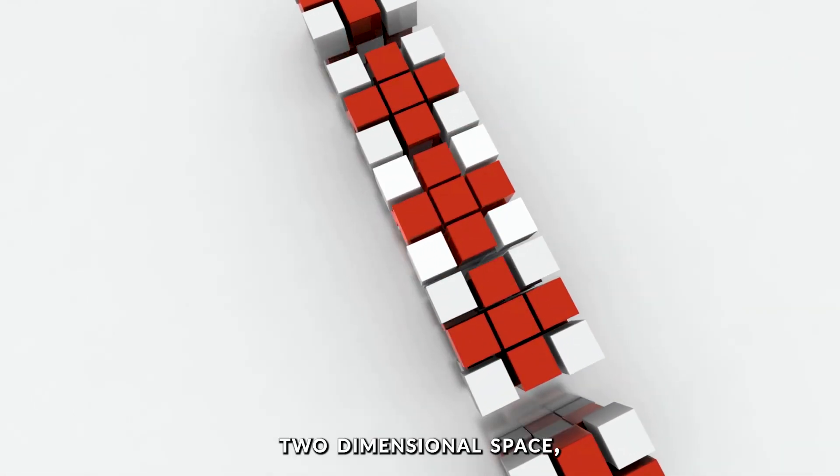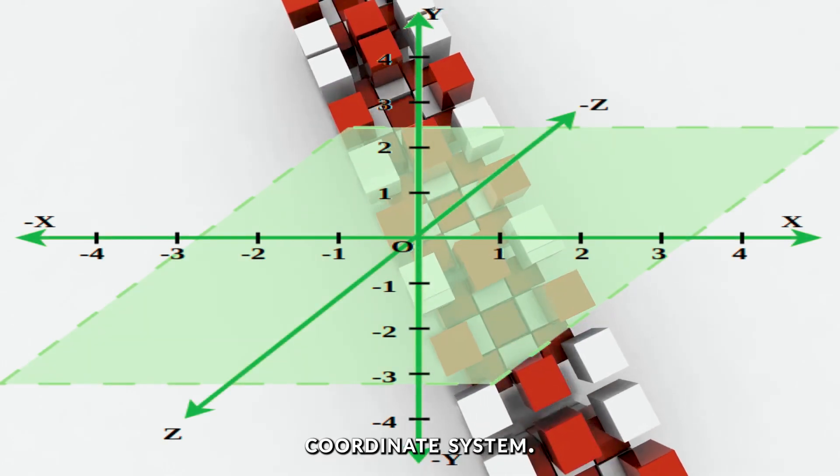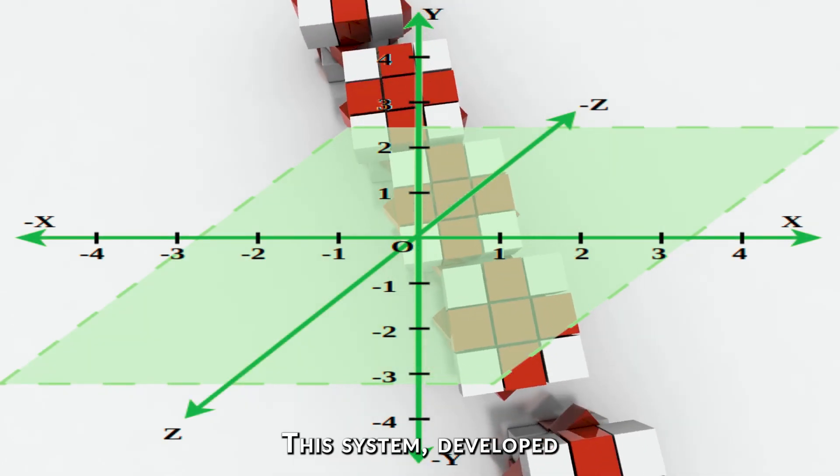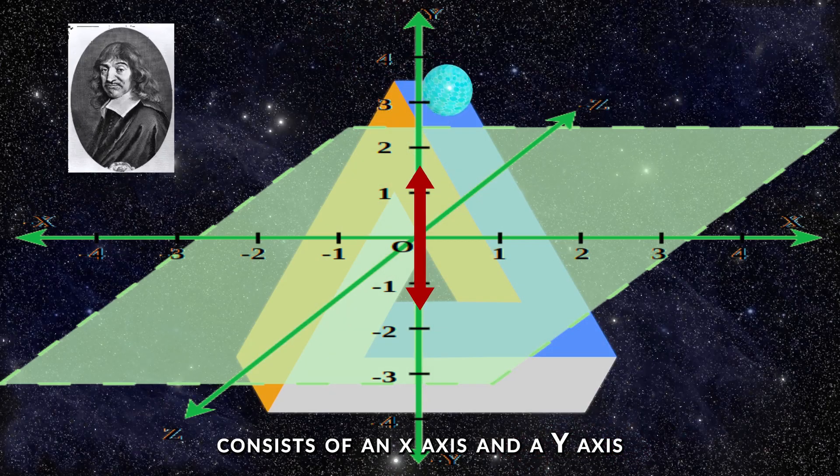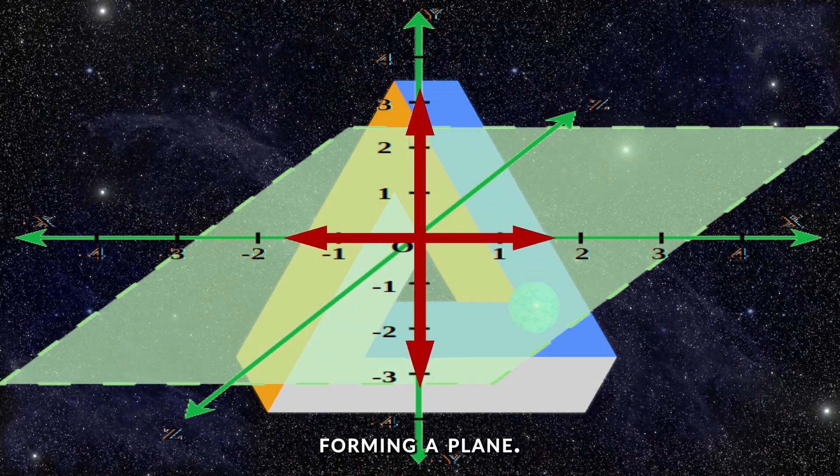To navigate two-dimensional space, we use a Cartesian coordinate system. This system, developed by Rene Descartes, consists of an x-axis and a y-axis, forming a plane.